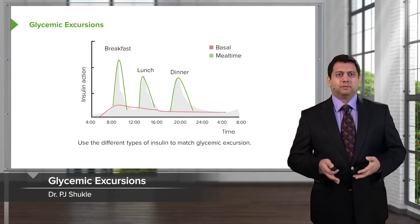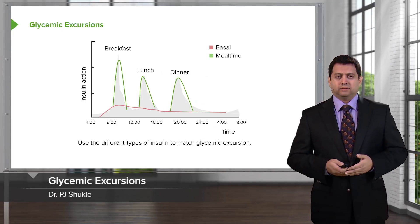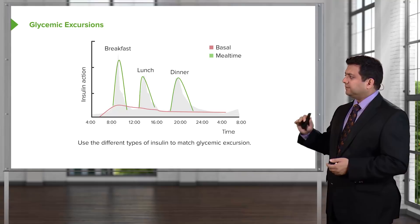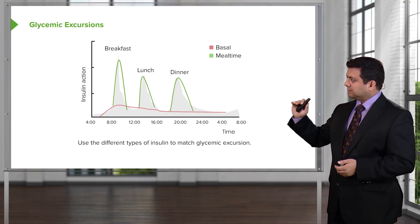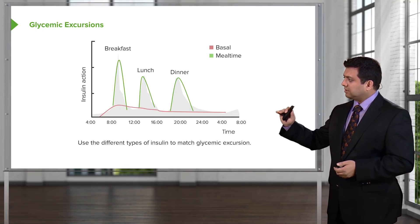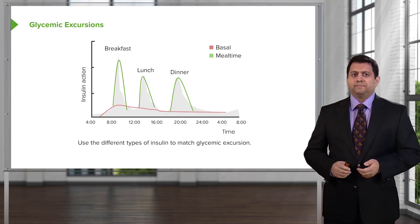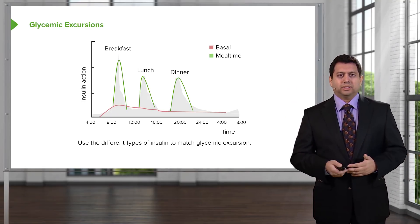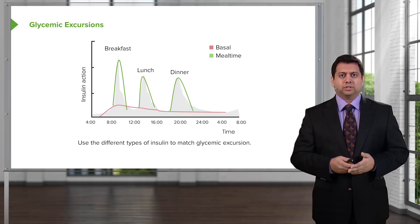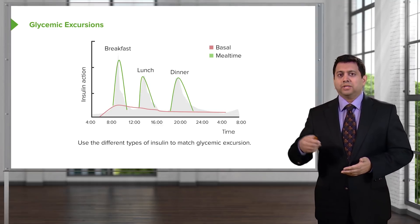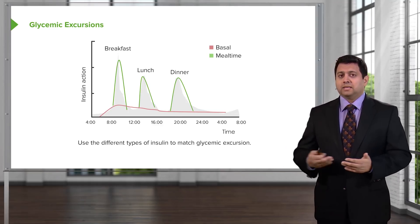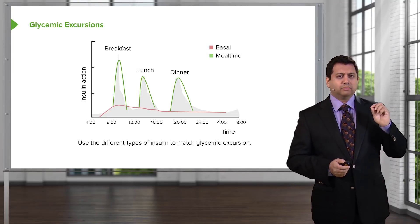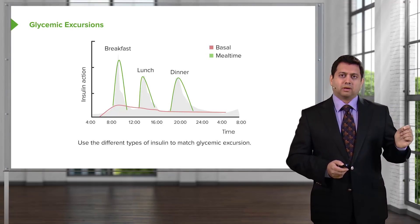Let's talk about the concept of glycemic excursion. Glycemic excursion really means the difference between the glucose level at the start of a meal and at the end of a meal. If you take a look at your breakfast excursion, that is the largest excursion of the day. Even though lunch and dinner may be larger meals, there's not as much of an excursion. This is going to be really important when we start prescribing insulin.